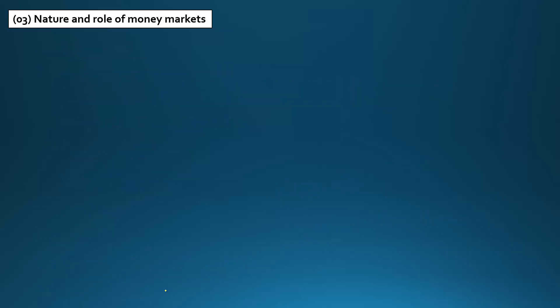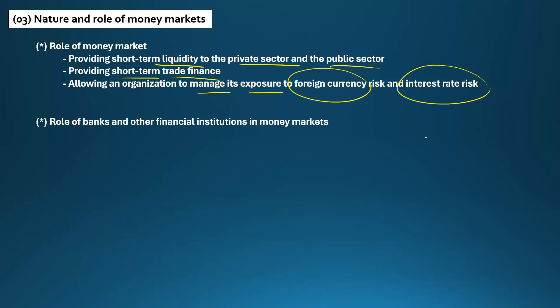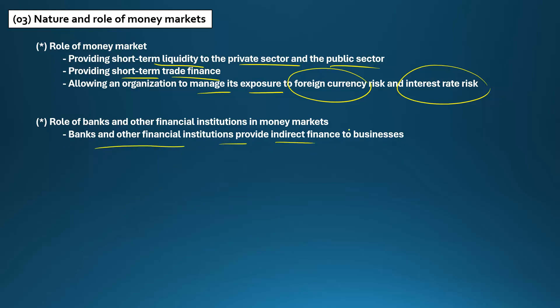The third key area is the nature and role of money markets. The money market provides short-term liquidity to private and public sectors, provides short-term trade finance, and allows organizations to manage their exposure to foreign currency risk and interest rate risk. Banks and other financial institutions work as financial intermediaries in the money market, providing indirect finance for businesses.